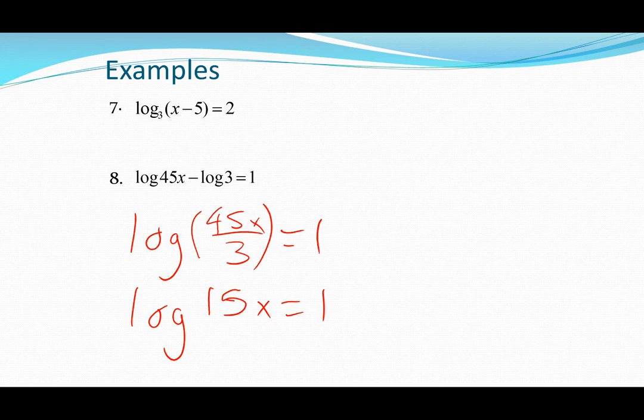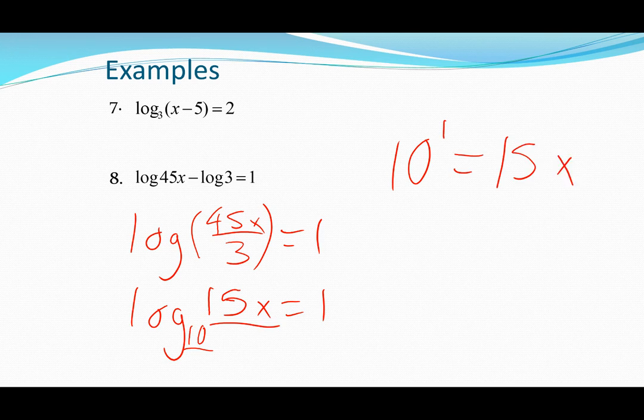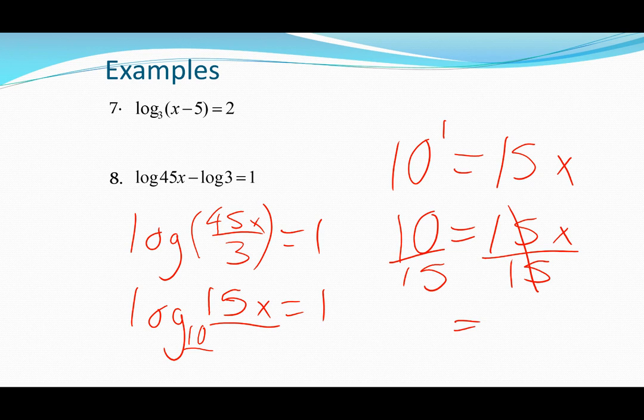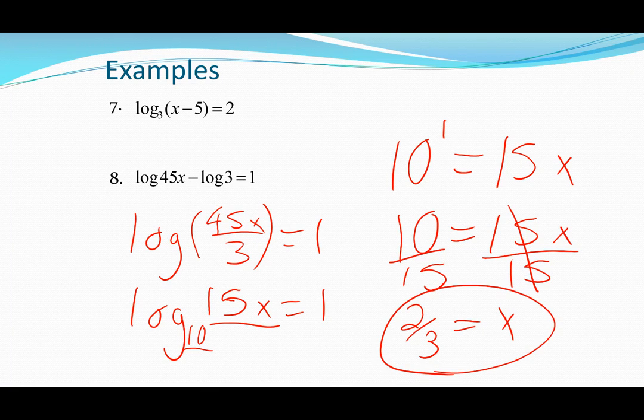If I lost you on that one, go back and watch the 7.4 video because I discuss the properties of the logs and how that works. Subtracting logarithms means dividing the values inside those logarithms. So 45x divided by the 3 makes 15x. Now I'm going to change it back into an exponential equation. To do that, you need to know what the base is of this log. There is no base written here, which means it's a common logarithm, which means that the base is 10. So my exponential equation conversion will be this 10 because that's the base. The 1 will be the exponent, so it'll be 10 to the first power equals that 15x. 10 to the first power is just 10. So 10 equals 15x. If I want to get that x by itself, I'll divide by 15. And so I end up with x equal to 10 over 15, which reduces to 2 thirds. And there's our answer.